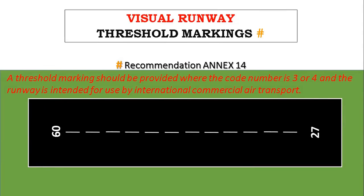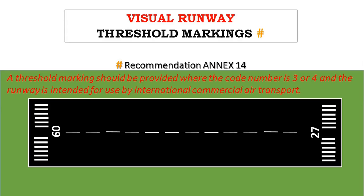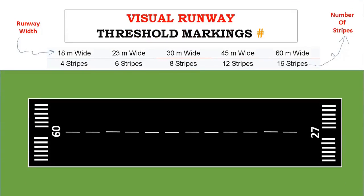Threshold markings: visual runways without an instrument approach do not have threshold markings. As per the recommendations of Annex 14, a threshold marking should be provided where the code number is 3 or 4 and the runway is intended for use by international commercial air transport. Threshold markings identify the beginning of the runway available for landing. The number of stripes is related to runway width — for example, 12 stripes correspond to a runway width of 45 meters, giving the pilot an indication of runway width.